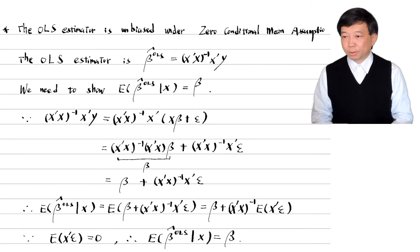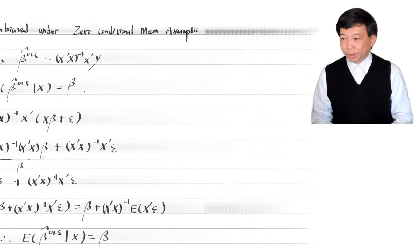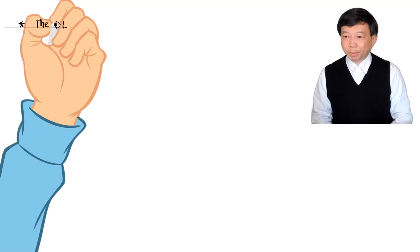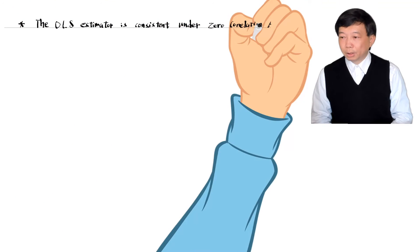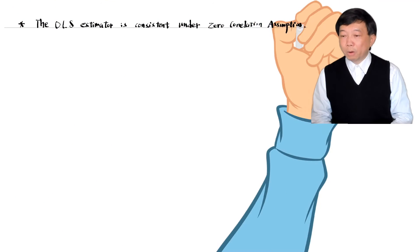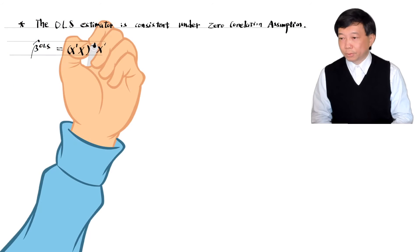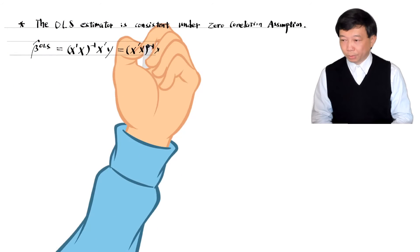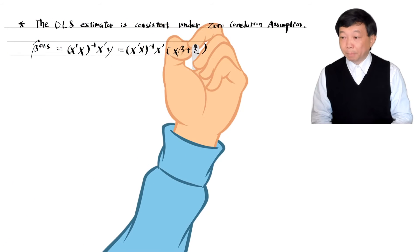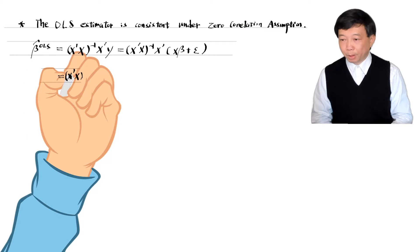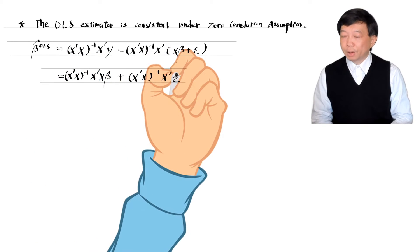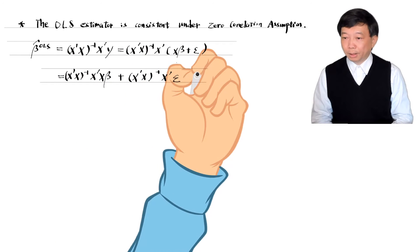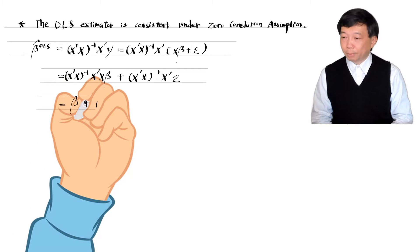Next, we show that the OLS estimator is a consistent estimator for the true parameter. We write the OLS estimator in two parts and show that the probability limit of the second part is zero. We can prove this using the zero correlation assumption.